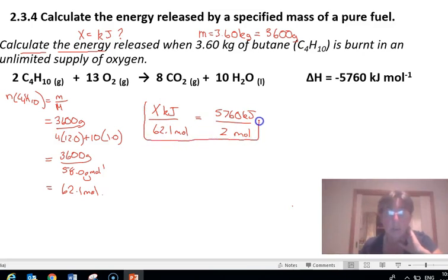We knew that those two numbers go together and we're just setting up a new situation. So this is always divided, you take it over the other side and multiply it. So the number of kilojoules is 5760 kilojoules over 2 moles.